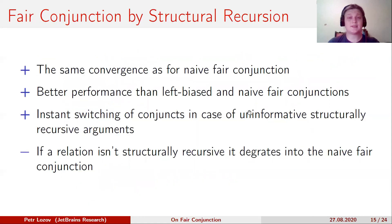To summarize, this algorithm has the same convergence as naive fair conjunction and better performance than left-biased and naive fair conjunctions. The need for conjunct switching is determined dynamically. But if a relation isn't structurally recursive, our approach degrades into the naive fair conjunction.